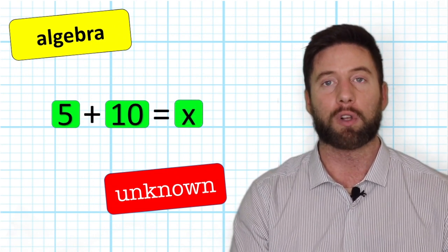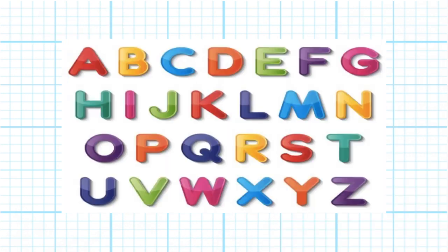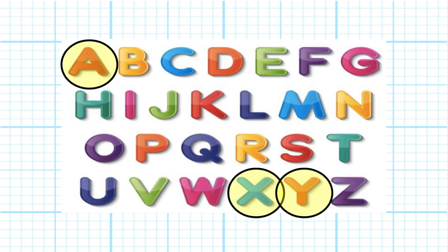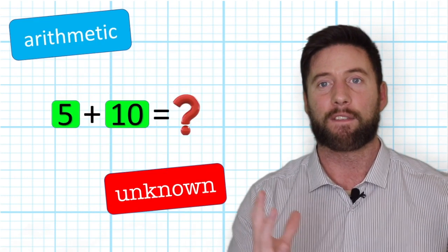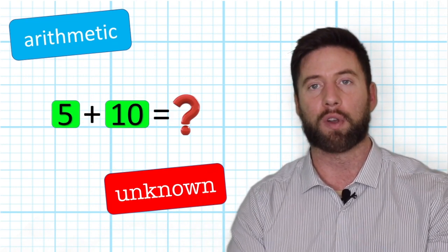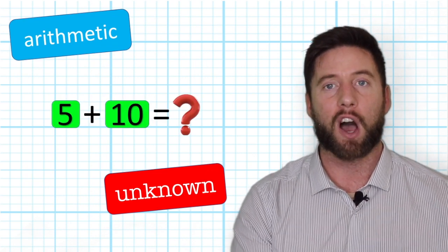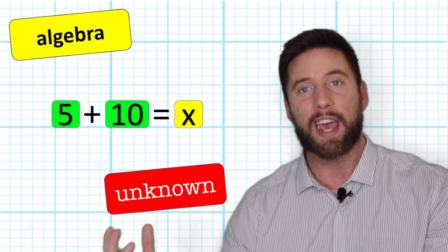A very common symbol would be X, but you can pretty much use any letter of the alphabet. X, Y, A, and B tend to be the four main ones used. So in arithmetic, we would leave it as 5 + 10 equals unknown. In algebra, we would have 5 + 10 = X.